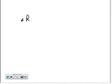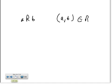A relation from A to B can be expressed in a few ways. You could write it as 'A R B', or it's sometimes written as '(A, B) exists in R'. But they all mean the same thing — a relation from A to B.